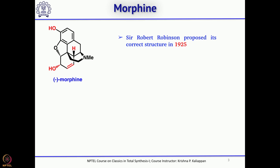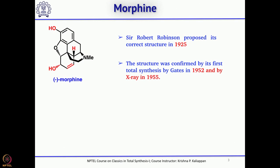As you can see, the natural product is quite complicated structurally, so it took quite some time to illustrate its correct structure. In fact, about 100 years ago Sir Robert Robinson, a well-known synthetic organic chemist, proposed the correct structure of morphine, and it took another 27 years to confirm the structure of morphine.